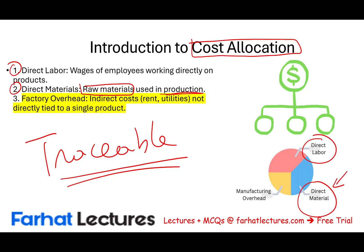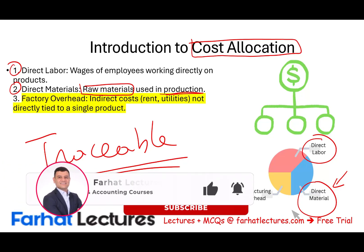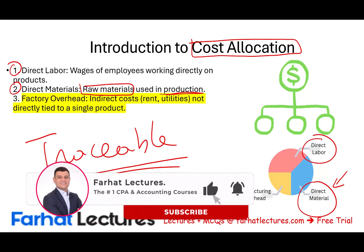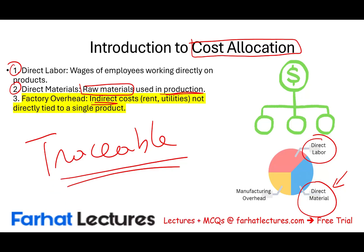The issue has always been factory overhead — manufacturing overhead — which includes indirect costs. In contrast to direct costs, indirect costs cannot be tied or traced directly. Those are indirect costs, and what we need to do with those indirect costs is allocate them.